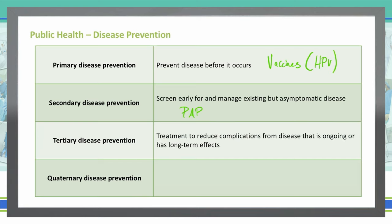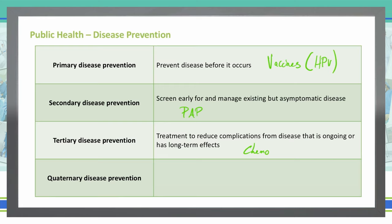Tertiary disease prevention is treatment to reduce complications from disease that's ongoing or having long-term effects. A good example is chemotherapy. We use chemotherapy to try and reduce the complications of cancer. If a patient has acquired cervical cancer, we can do certain treatments like chemotherapy to help reduce the risk of it spreading and growing.